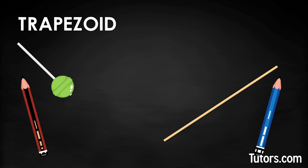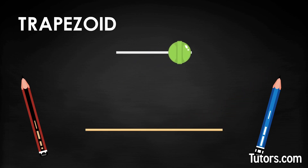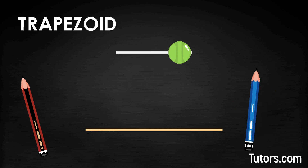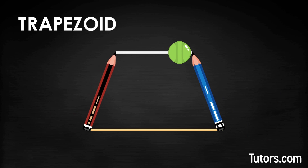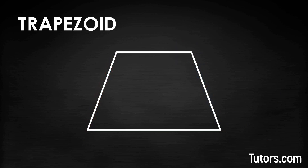Lay two of the objects down or draw two line segments so they are parallel and equidistant. Make them horizontal to you. Put the other two objects on the left and right of these two, or draw them in, so all eight endpoints touch. There you have it — a trapezoid.